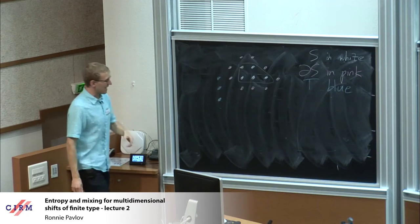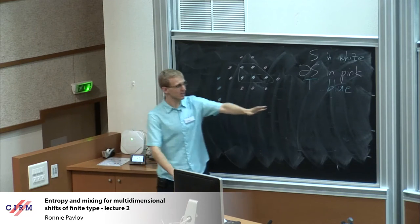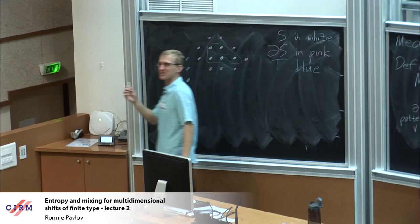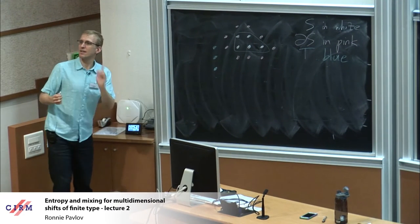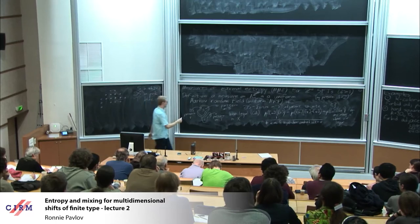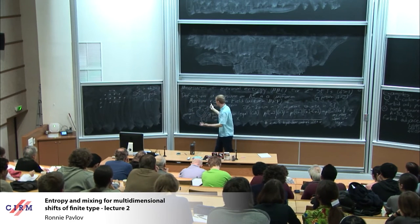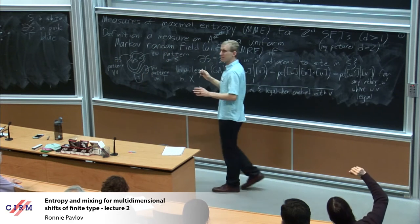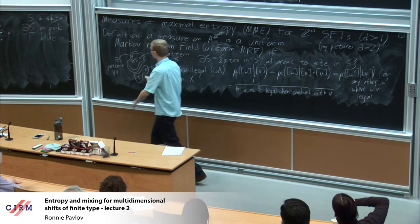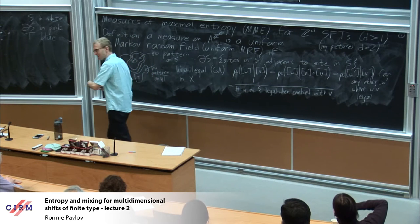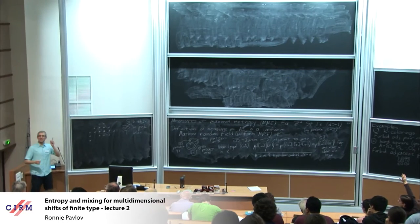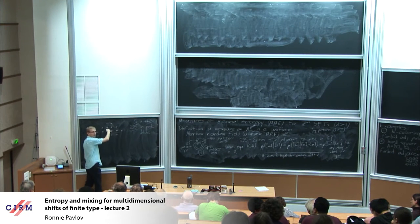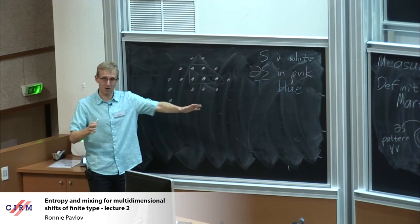Informally, the blue letter thing should make sense — the only restrictions for SFTs are between adjacent pairs of letters. Blue and white can't be next to each other; that's the definition of the boundary. So if I want to know what I can put in the white without causing a problem, it only depends on the pink letters. It's not a proof of why this property holds, but it should be believable.